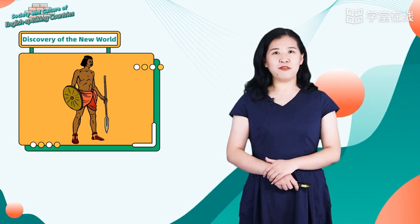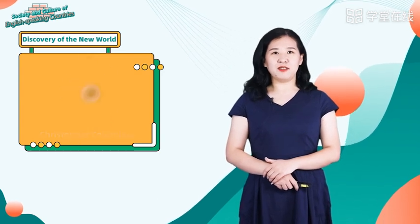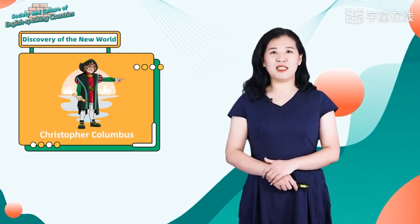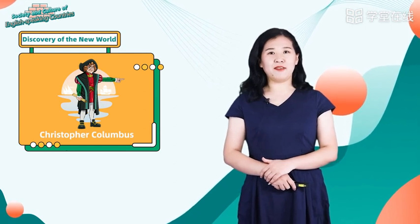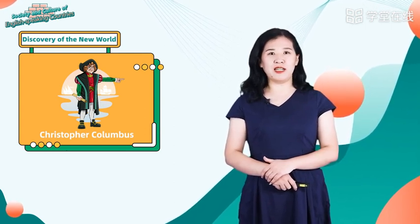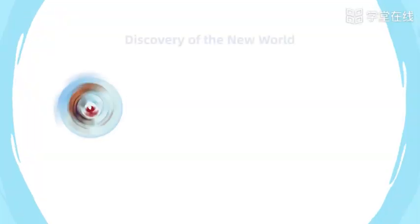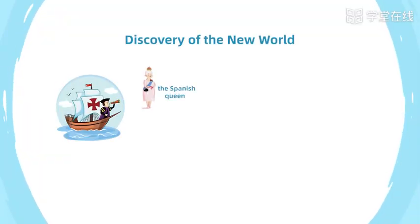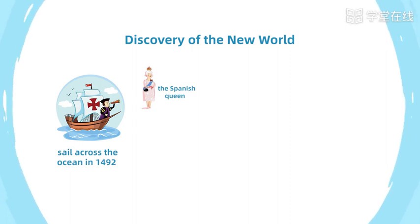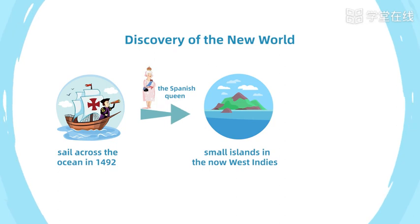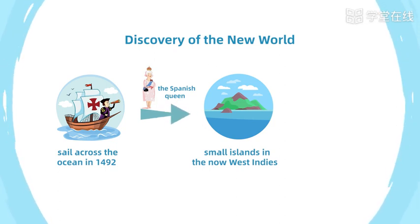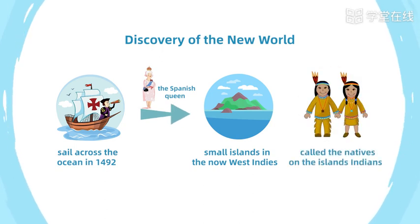In the late 15th century, Christopher Columbus, an Italian navigator, thought he could reach India by sailing west, supported by the Spanish Queen. He led his men to sail across the ocean in 1492 and reached some small islands in the now West Indies. He believed he had reached Asia and called the natives on the islands Indians.